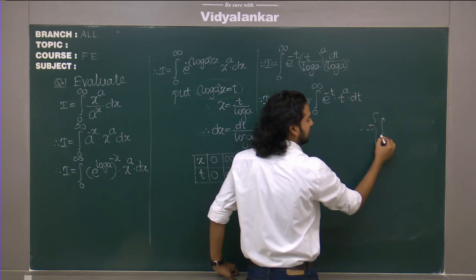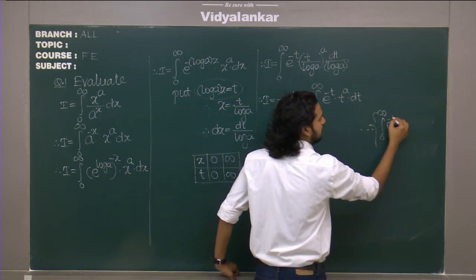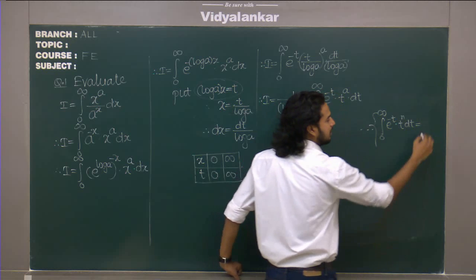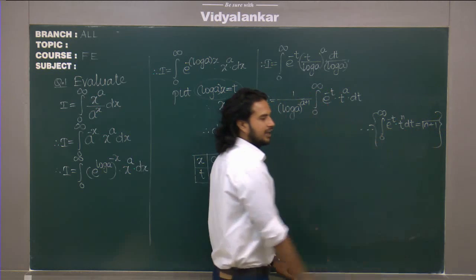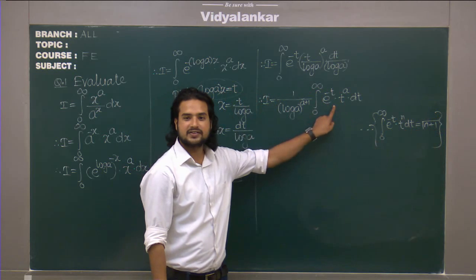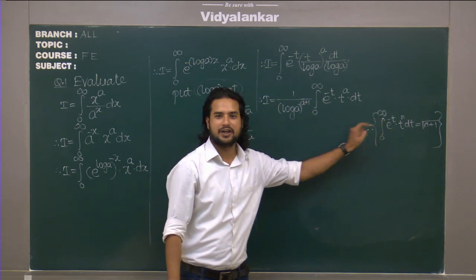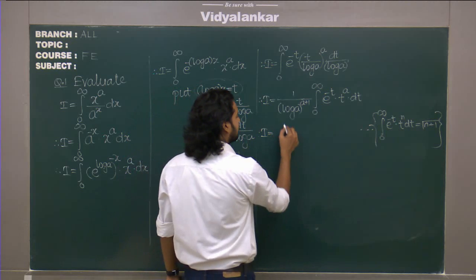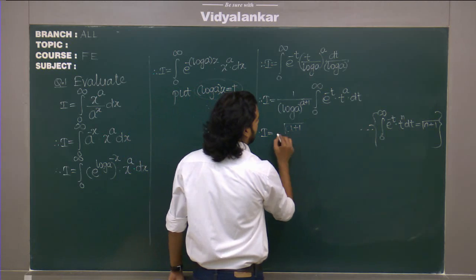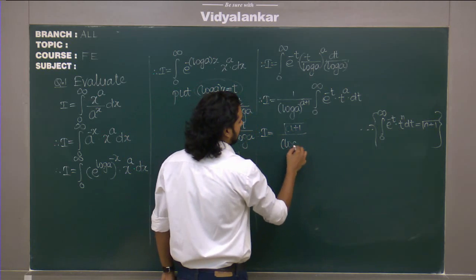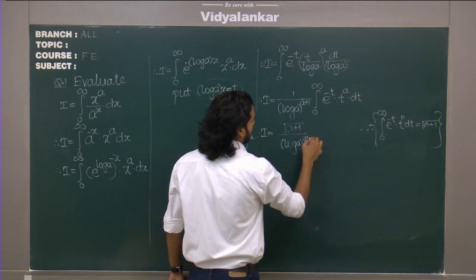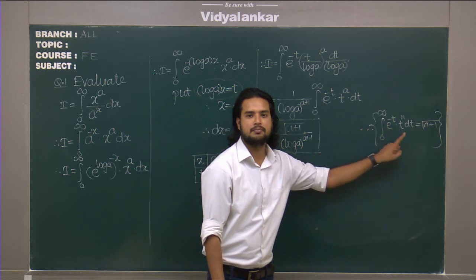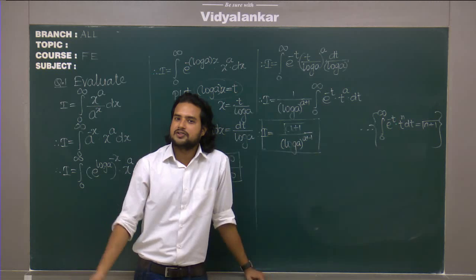Our definition of gamma was this. 0 to infinity e raised to minus t, t raised to n dt and that's nothing but gamma n plus 1. See you have got the same pattern t raised to a you simply have to write it as now gamma a plus 1 divided by log a raised to a plus 1 because it follows the definition my answer is gamma a plus 1 that's it.